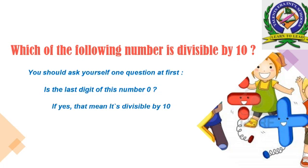Let us show the examples. The first example: 630. Is the last digit of 630 zero? Yes, the last digit of 630 is 0, so that means it's divisible by 10. The second example: 245. Is the last digit of 245 zero? No — that means it's not divisible by 10.